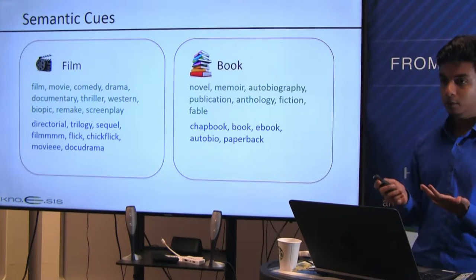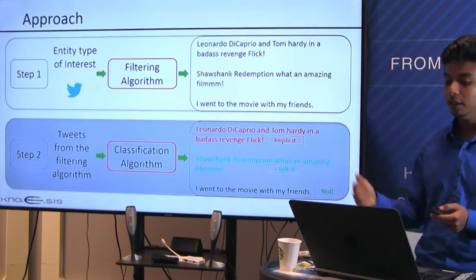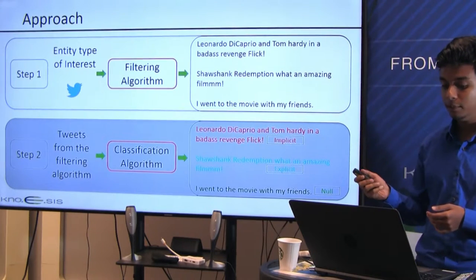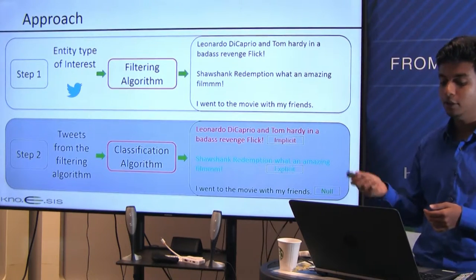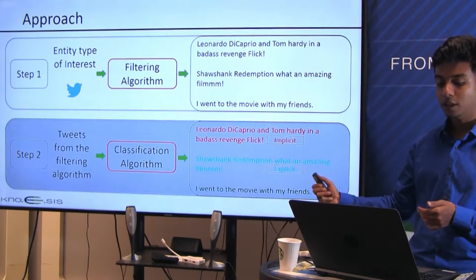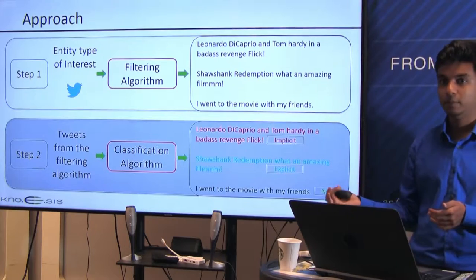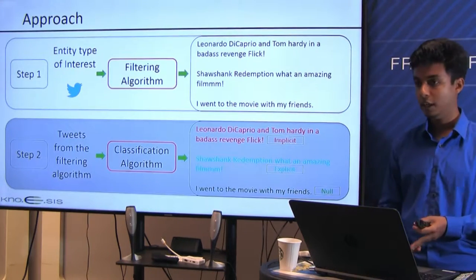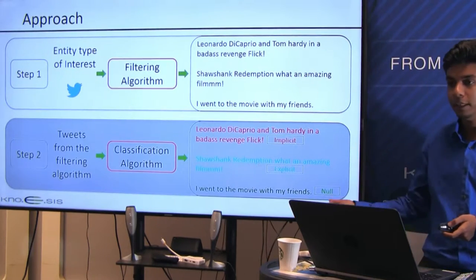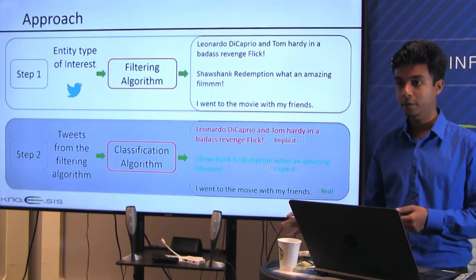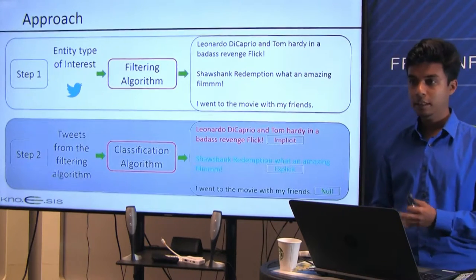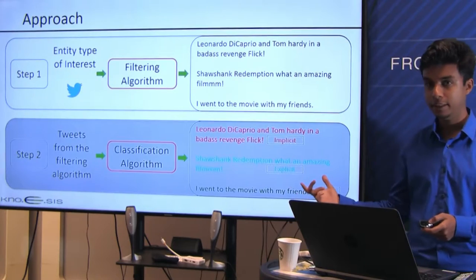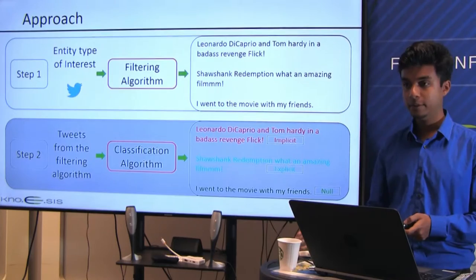Once we have extracted both formal and informal semantic cues, we stream tweets using those cues. But not all of these tweets will have implicit entity mentions. For example, 'Leonardo DiCaprio and Tom Hardy in a badass revenge flick' has an implicit movie mention. 'Shawshank Redemption, what an amazing film' has an explicit entity mention. And 'I went to the movie with my friends' has no entity mention at all — implicit or explicit. So we treat this as a classification problem with three classes: implicit, explicit, and null.